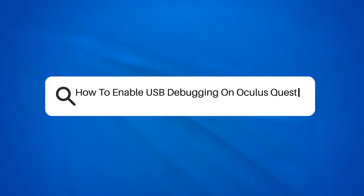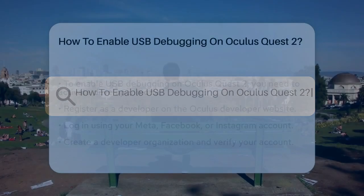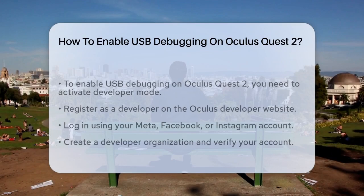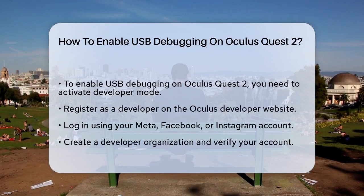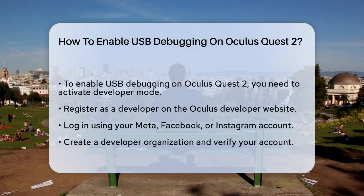How to enable USB debugging on Oculus Quest 2. If you're looking to develop apps or make some advanced tweaks on your Oculus Quest 2, you'll need to enable USB debugging. This feature allows your headset to communicate with your computer, which is essential for testing and debugging your applications.